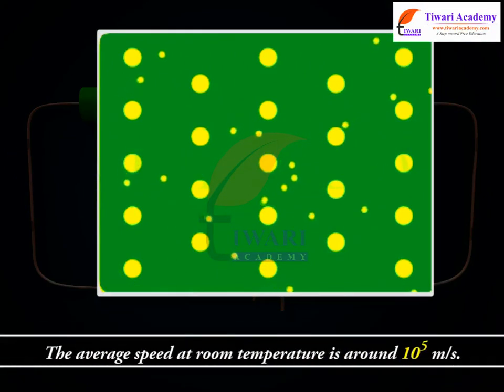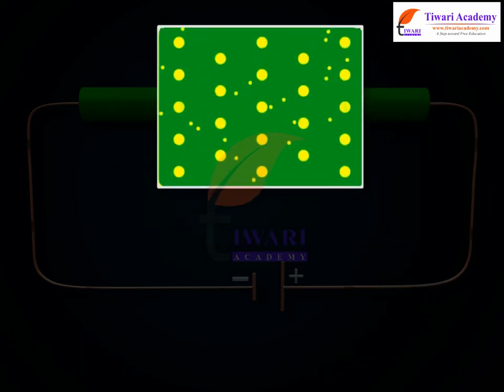The average speed at room temperature is around 10 raised to power 5 meter per second. Due to the random direction of motion of such electrons, their average thermal velocity is 0 at room temperature.